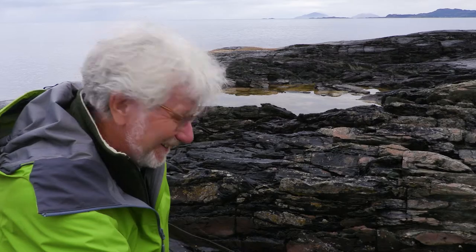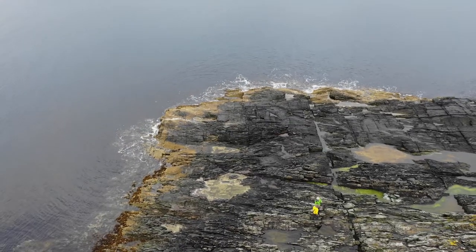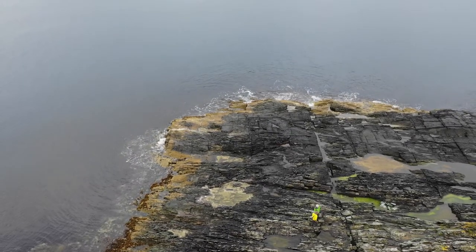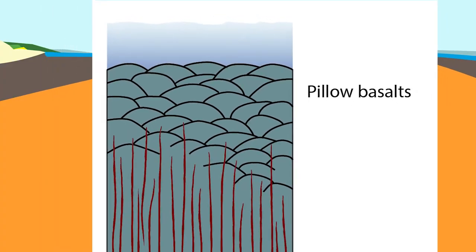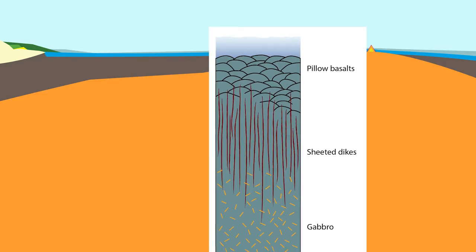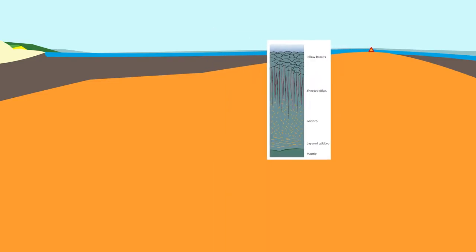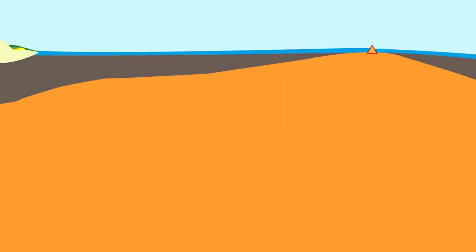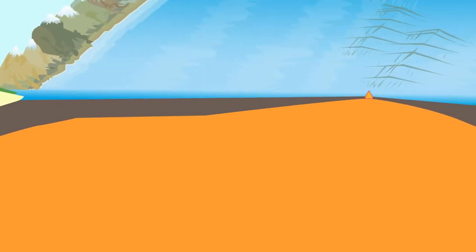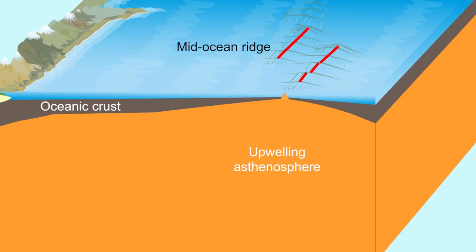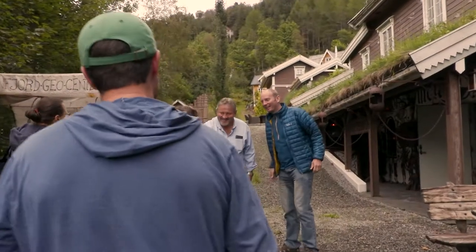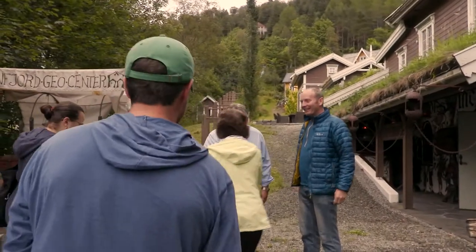By understanding the structures we see within the outcrops — like these pillow lavas — we can build up a picture of the ocean crust that's developing and forming this vast Iapetus ocean. Later that evening we're meeting up with one of the local geologists, a former student of Torge's.